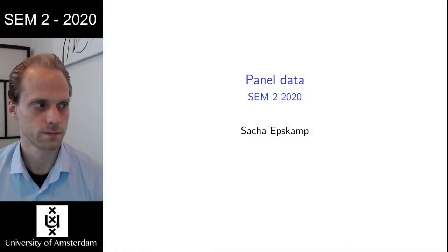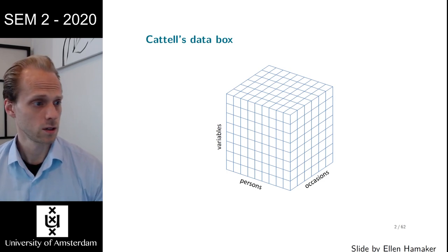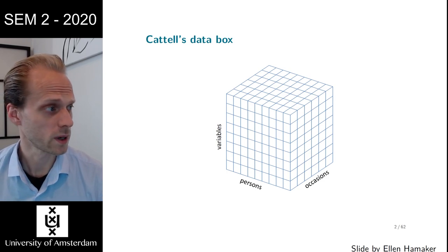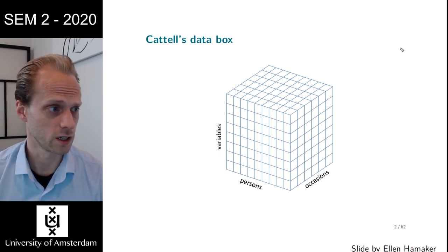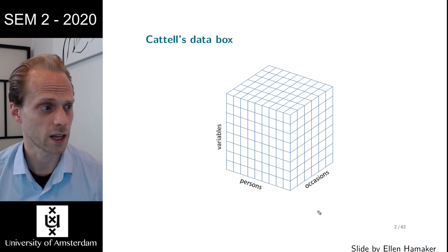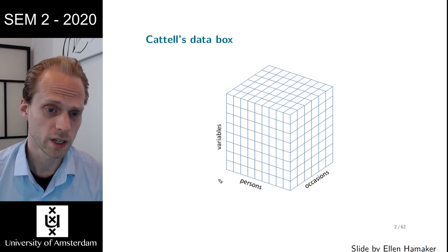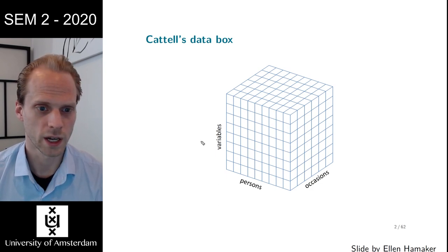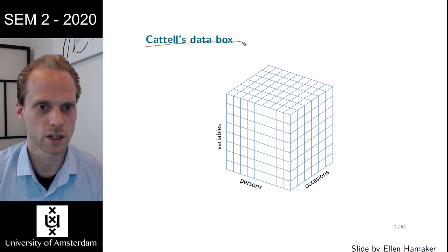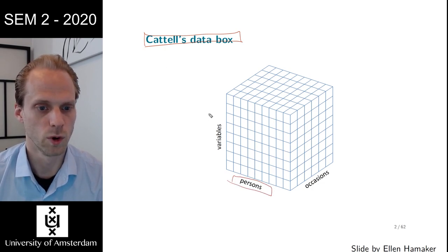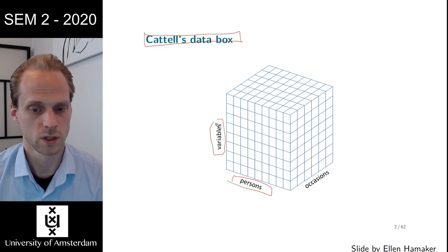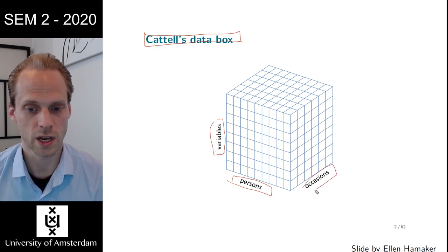In this video I want to talk about panel data designs where we measure many people on a few occasions. First I want to talk a bit about how you can measure people. These are slides by Aaron Heimacher. Basically we can think of possible data collection as Cattell's data cube, where we can have people measured on multiple variables on potentially different occasions as well.